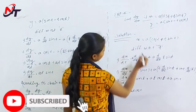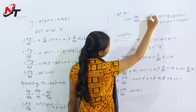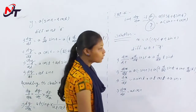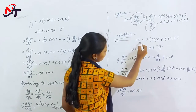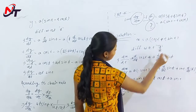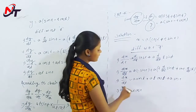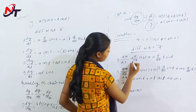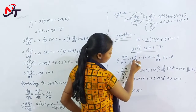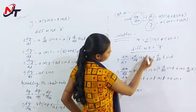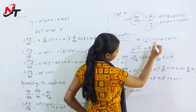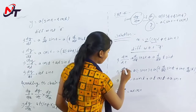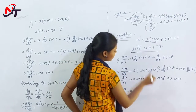Solution: First, find dx/dt. x is equal to a cos t plus t sin t. Differentiating with respect to t: dx/dt. The derivative of a cos t — a is a constant — gives minus a sin t.